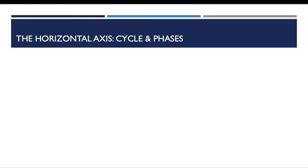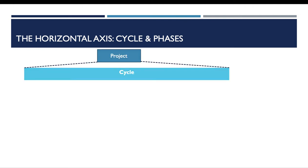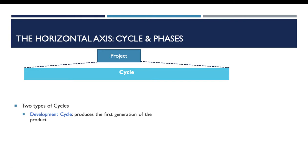For the horizontal axis, specifically for cycles and phases: a project using the Rational Unified Process may be performed using one cycle or many cycles. If it uses one cycle, it will mainly use the development cycle, which produces the first generation of the product. If more than one cycle is used, those cycles are called evolution cycles, and they are triggered when the user suggests any enhancements.